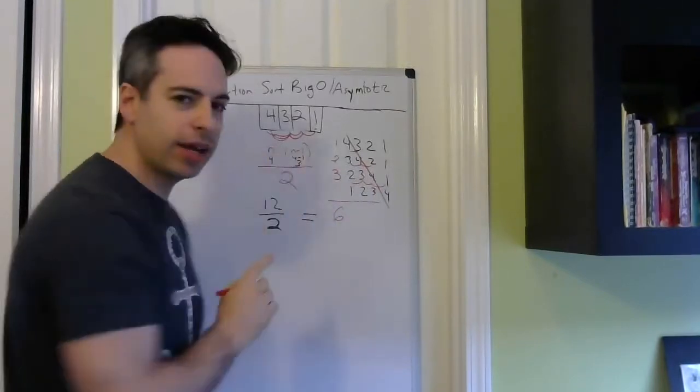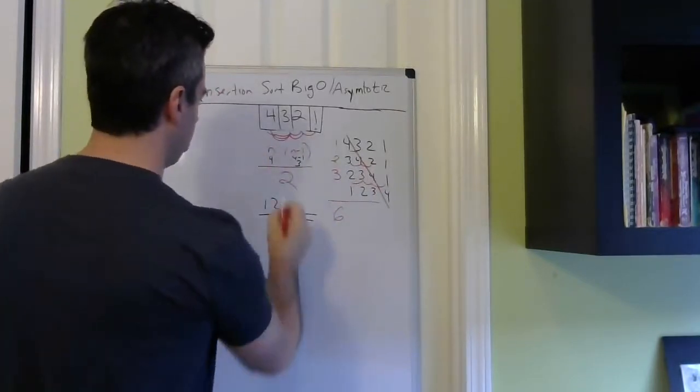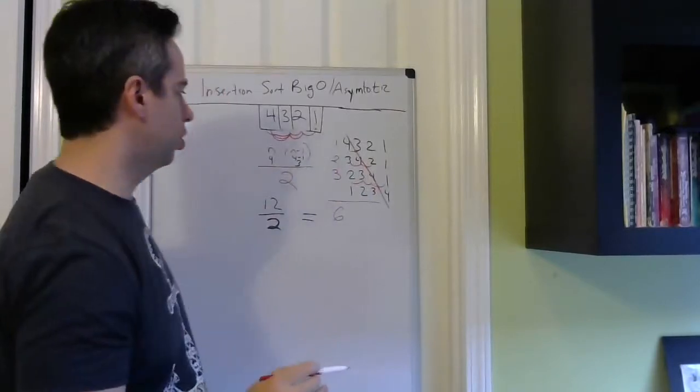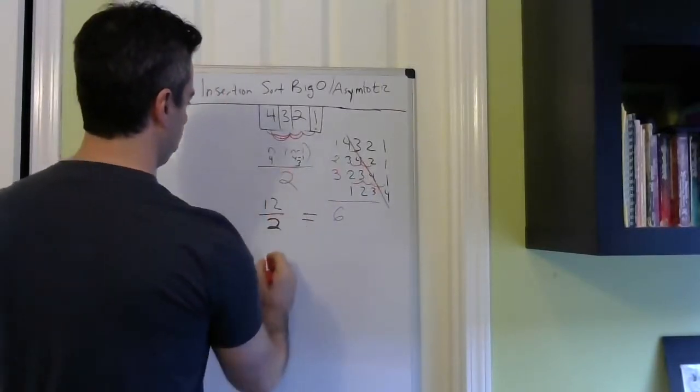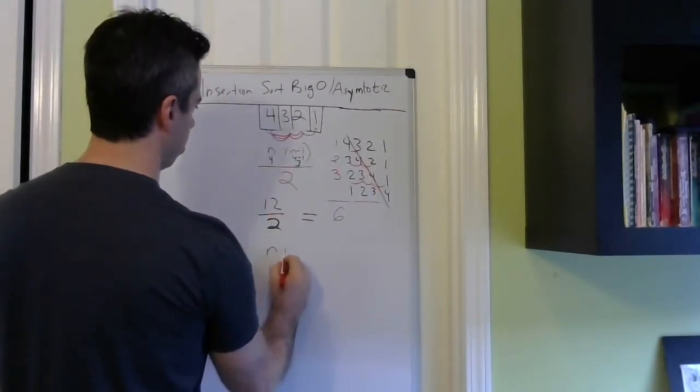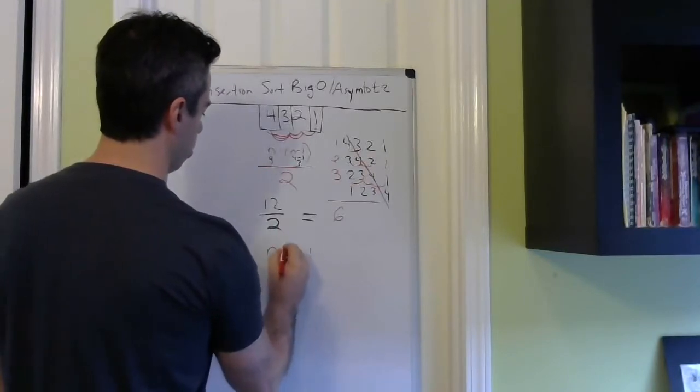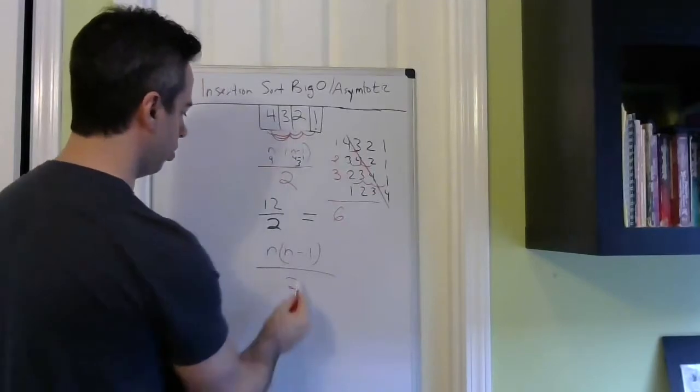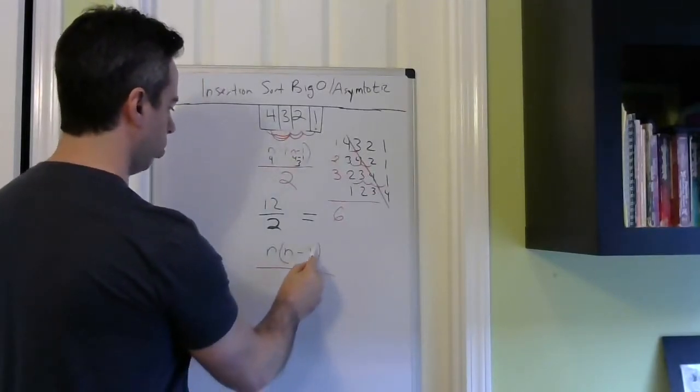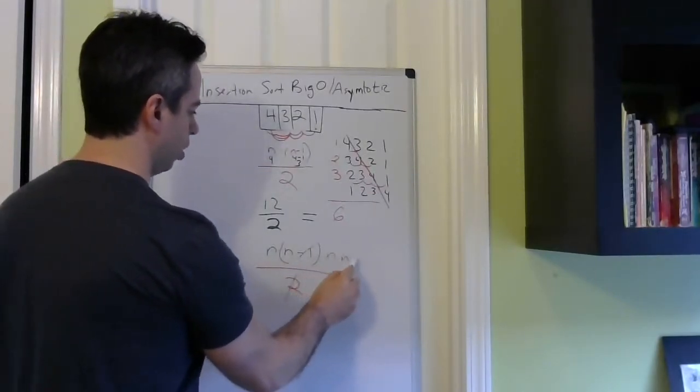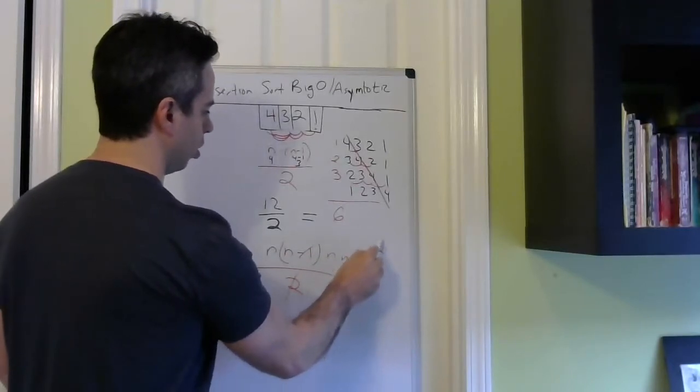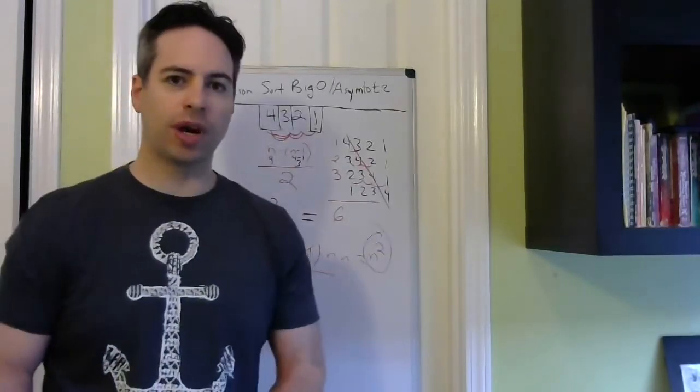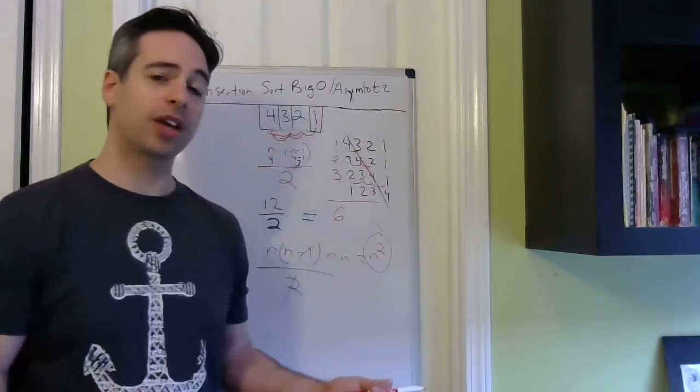But now why is this n squared? It's because we drop the constants. So if we take this, rewrite it, drop the 2, drop the 1, n times n equals n squared, which is what everyone says anyway. So this gives a little explanation as to why it's actually n squared.